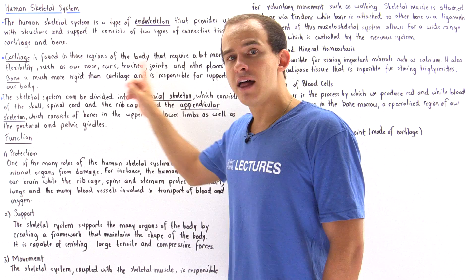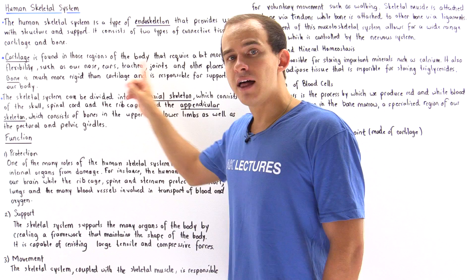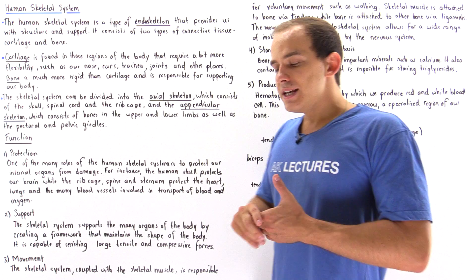Now the exoskeleton sheds as the organism grows, but the endoskeleton does not shed. In fact, it grows as the organism itself grows. The human skeletal system consists of two types of connective tissue.